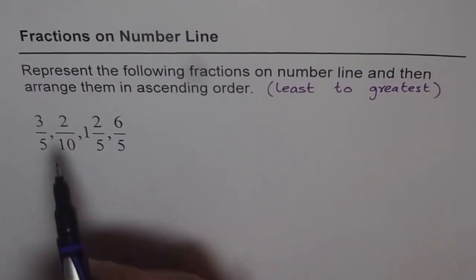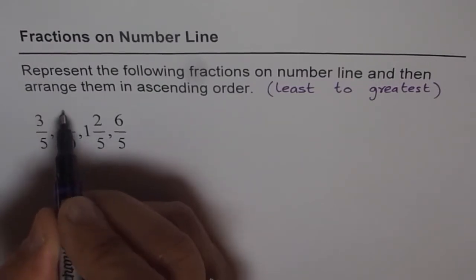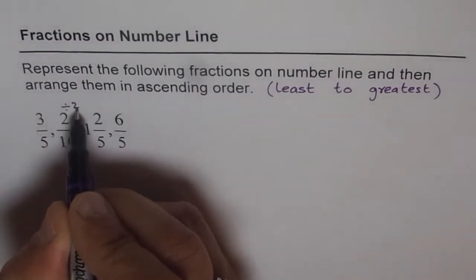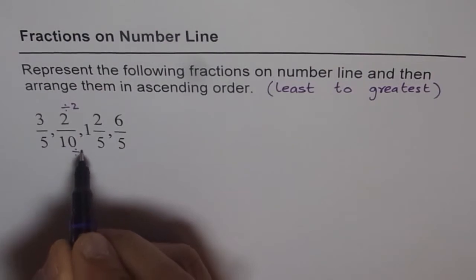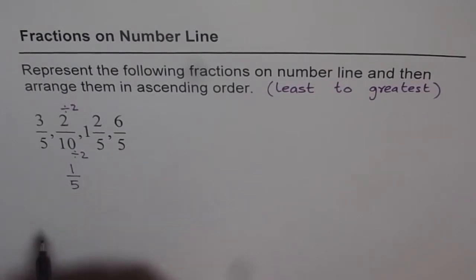As you can see 2 over 10 can be written as 1 over 5. You can divide both numerator and denominator by 2 then you can get 1 over 5. So let me divide both numerator and denominator by 2 and then what we get here is 1 out of 5. So that is our second fraction.